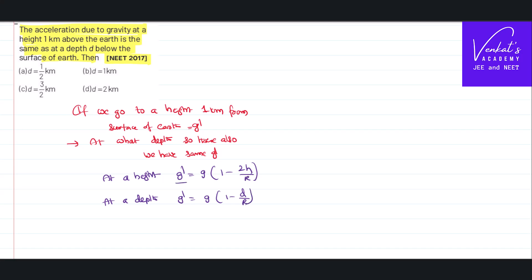He is saying this g dash equal to this g double dash. So g of 1 minus 2h by r equal to g of 1 minus depth by r. So g will cancel, 1 and 1 also will cancel, minus and minus also will cancel. 2h by r equal to d by r. That implies simply depth equal to twice the height.